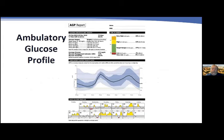CGMs now generate what's called the Ambulatory Glucose Profile report. Although they all look slightly different, they share standard features. I recommend looking at the statistics first rather than the graph. The bar graph shows time in the target range in green — which should be 70% or greater for most people with diabetes — plus yellow for high (above 181), very high (above 250), low (below 70), and very low (below 54). The report also shows average daily glucose, a predicted A1C or Glucose Management Indicator, and glucose variability percentage.